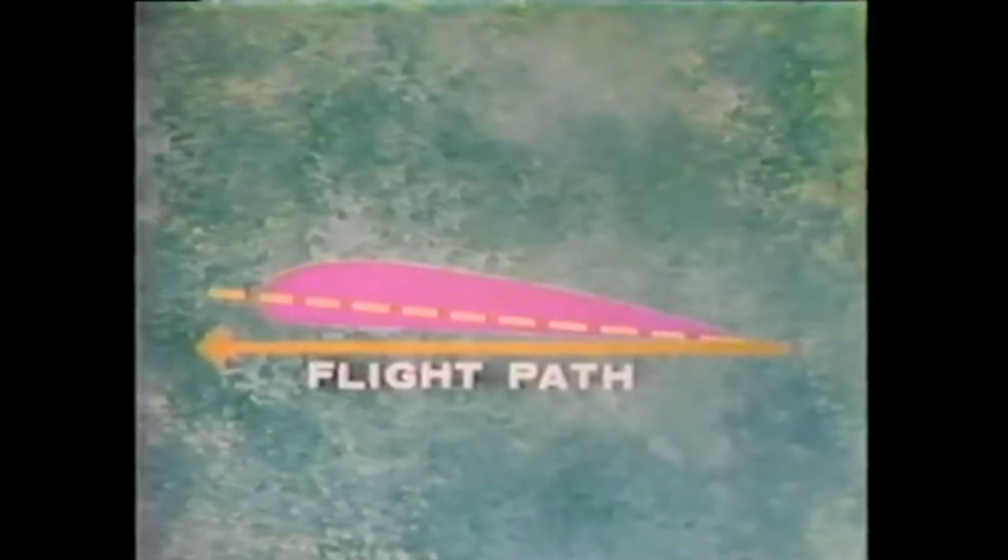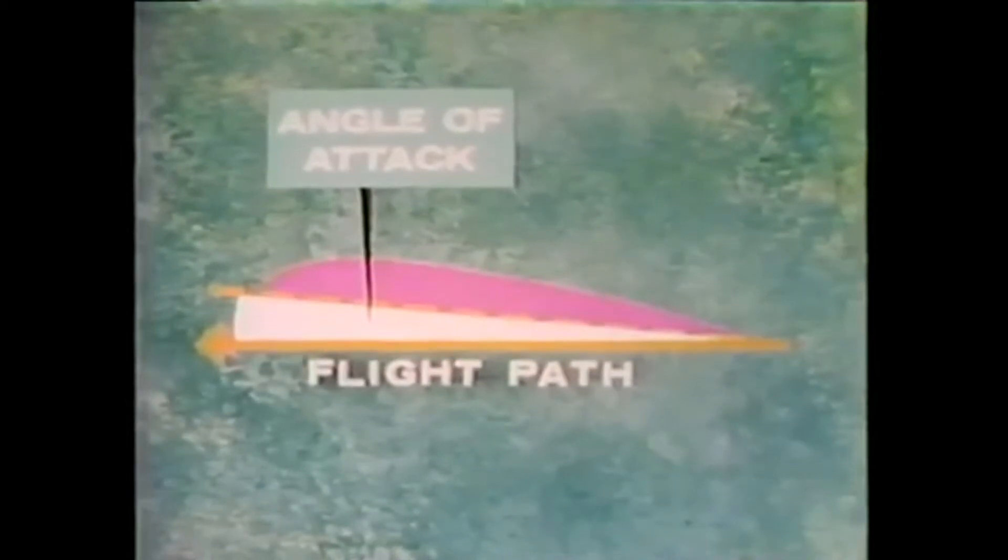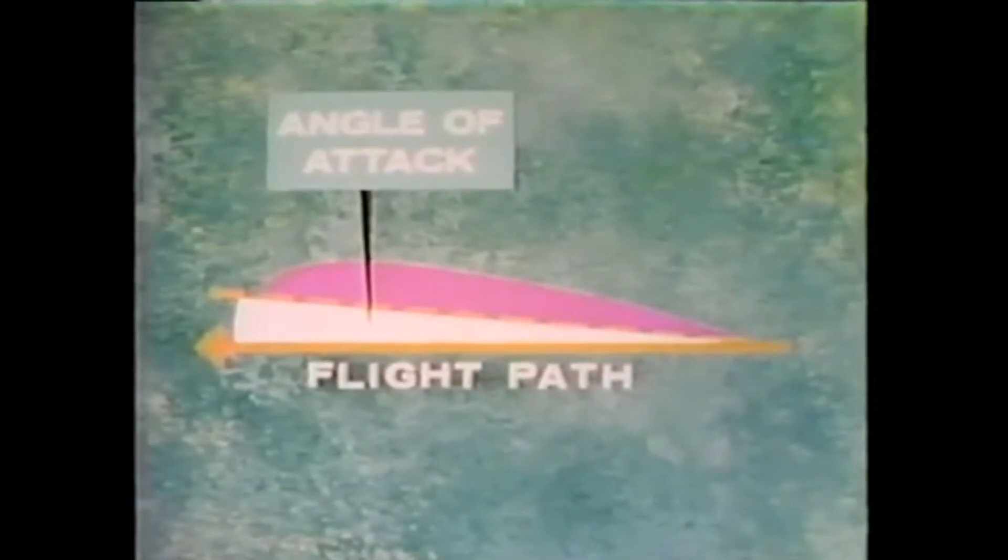The center line or cord line of the airfoil, however, even in level flight, forms a small angle with the flight path. We call this angle the angle of attack. We have given it the symbol alpha.